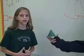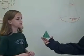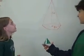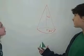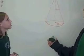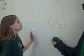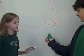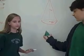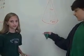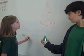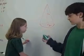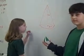Finding the volume of a cone. To find the volume of a cone, you need to do pi r squared times the height divided by 3, because 3 cones can fit into a cylinder depending on what measurement it is.